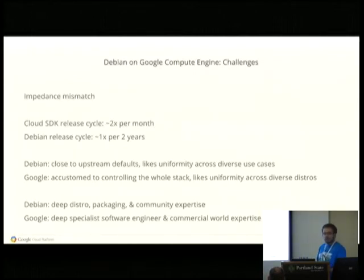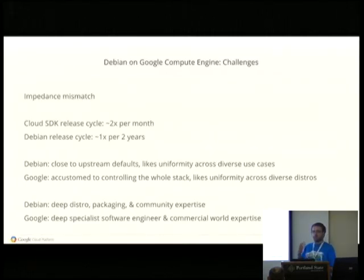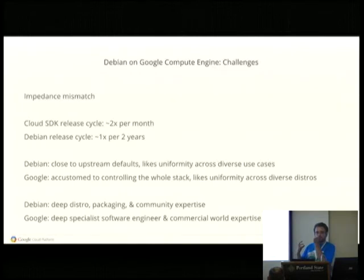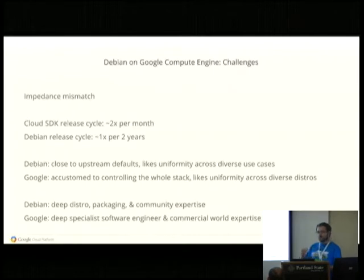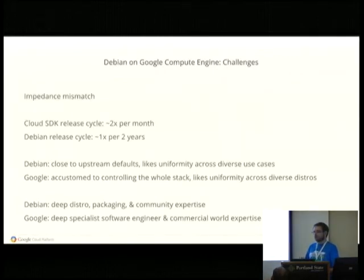We need to know what we're debugging and helping with. Similarly, Google is used to building things in a context where it can control a surprisingly large portion of the stack, sometimes down to the software, sometimes down to the hardware, and it's used to building things in an integrated fashion and to having uniformity within the Google context more than across different distributions. Everyone is actually in good faith and people are trying to bend in useful ways — it's just an ongoing effort to make people see how the other group works, but it's actually going pretty well. These are not obstacles; these are ongoing things to work on.